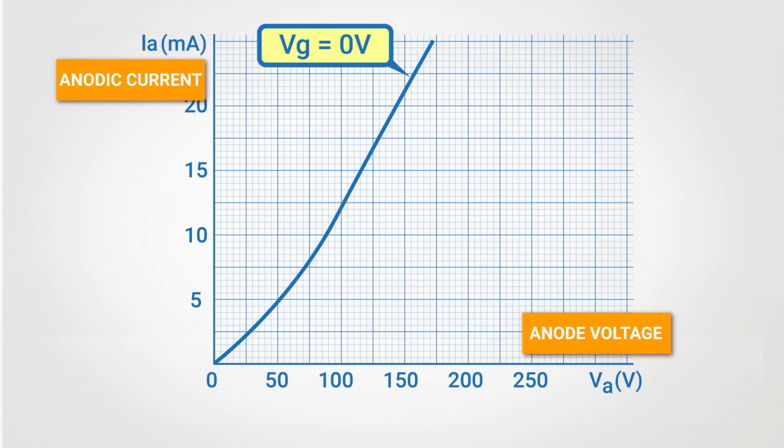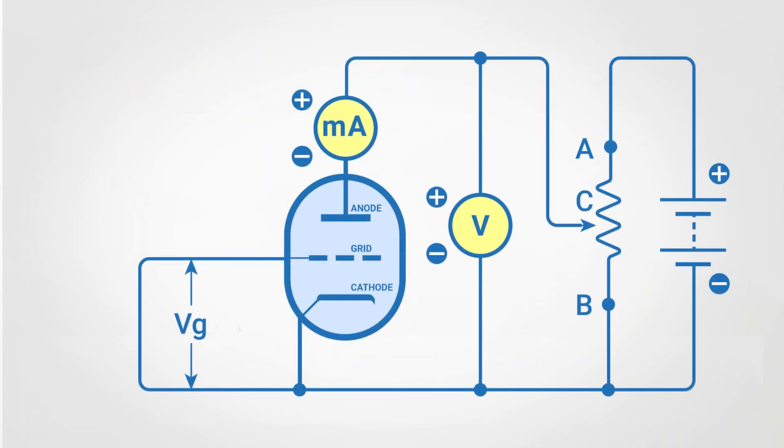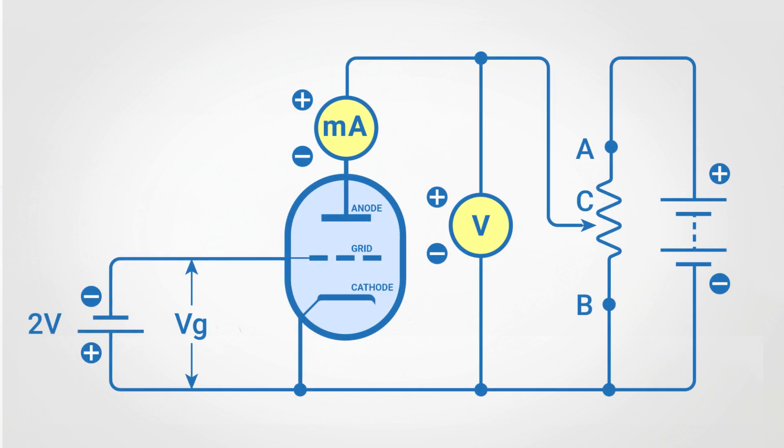It is necessary to bring the grid to a different electric potential than the cathode in order to observe its influence on the anode current. So let's try to connect a battery between these two electrodes. The voltage of this battery is 2V. We connect its positive pole to the cathode and its negative pole to the grid. Now, the electric potential of the grid is 2V less than the cathode electric potential. So the grid voltage is equal to minus 2V.